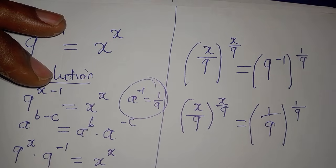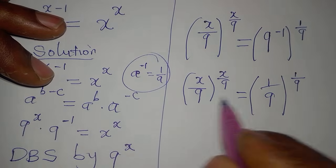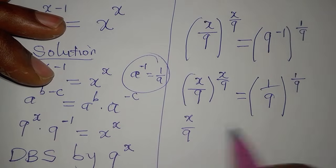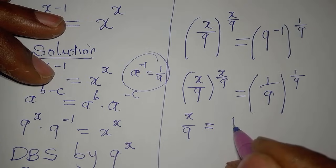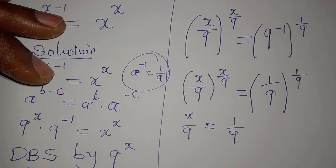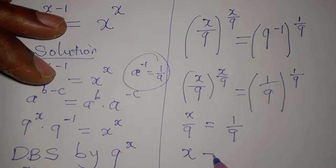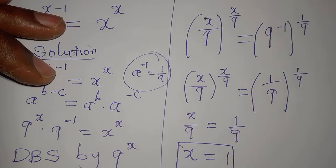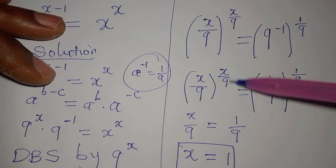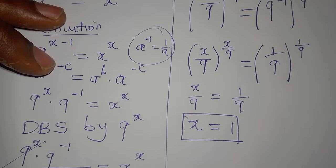The left-hand side and right-hand side can now be compared. The base on the left is x over 9, and it must equal the base on the right, which is 1 over 9. Since both denominators are 9, the numerators must be equal, giving us x equals 1. Checking the powers confirms the same result, so we conclude x equals 1.